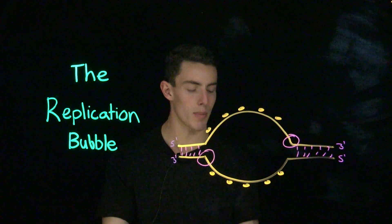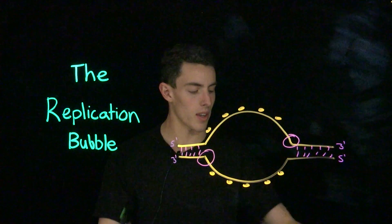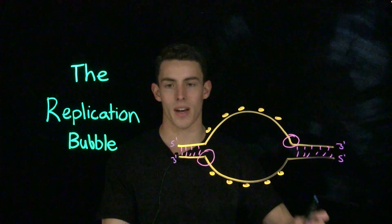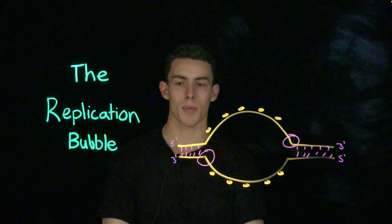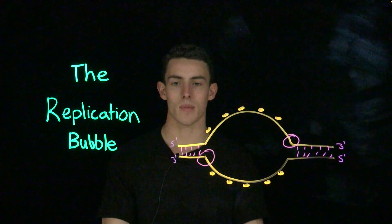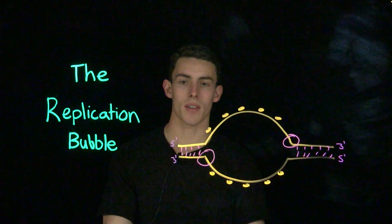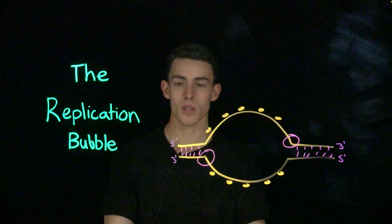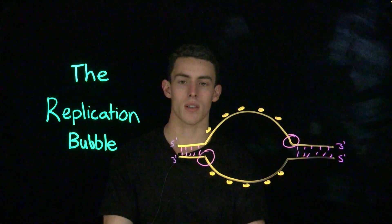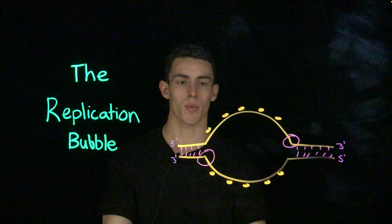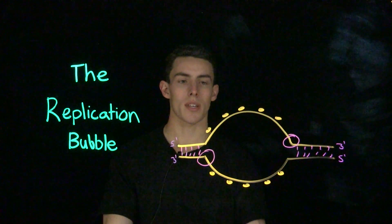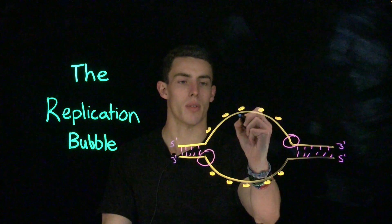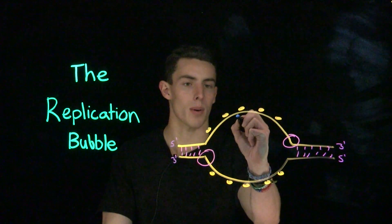Now that we think about the replication bubble, we have to think about an important factor. You can't start replicating DNA without an origin of replication. And once you have an origin of replication, you can't start without a three prime hydroxyl group. And so we need a special thing called a primer.